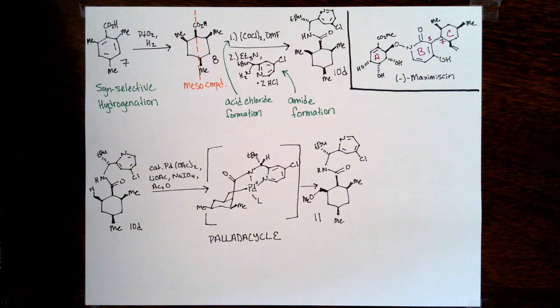Like Grace was alluding to, this is a really powerful strategy. This is a strategy that many chemists use in their retrosynthetic analysis in that they look for hidden symmetry in a molecule. If you can retrosynthetically go back to a meso compound in the forward direction, you can set a lot of stereocenters at once.